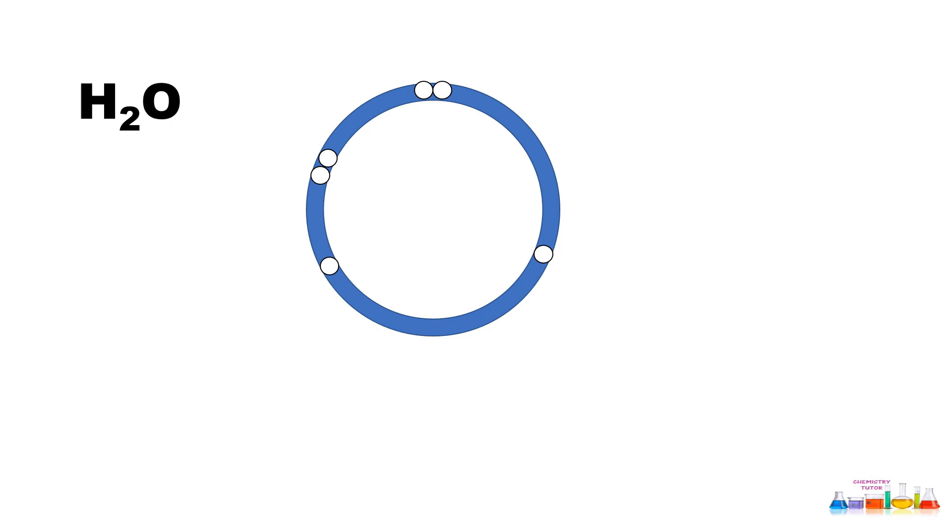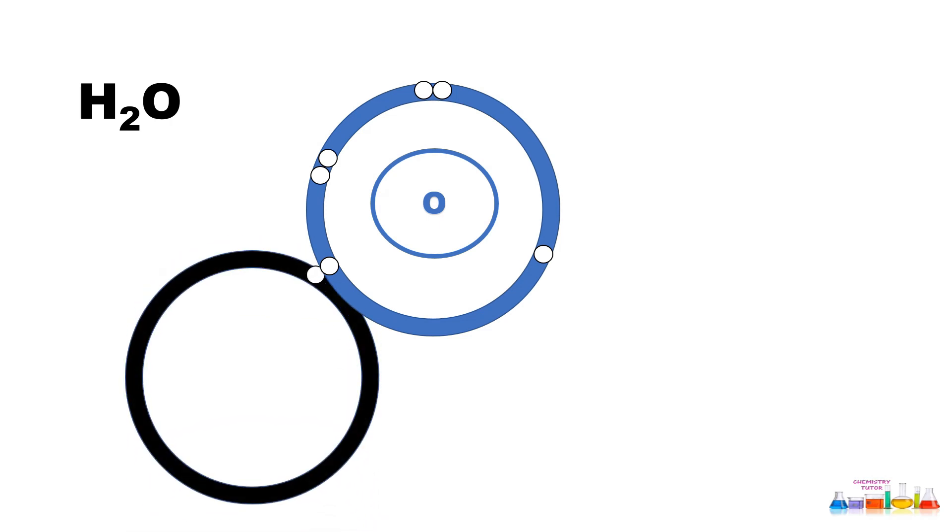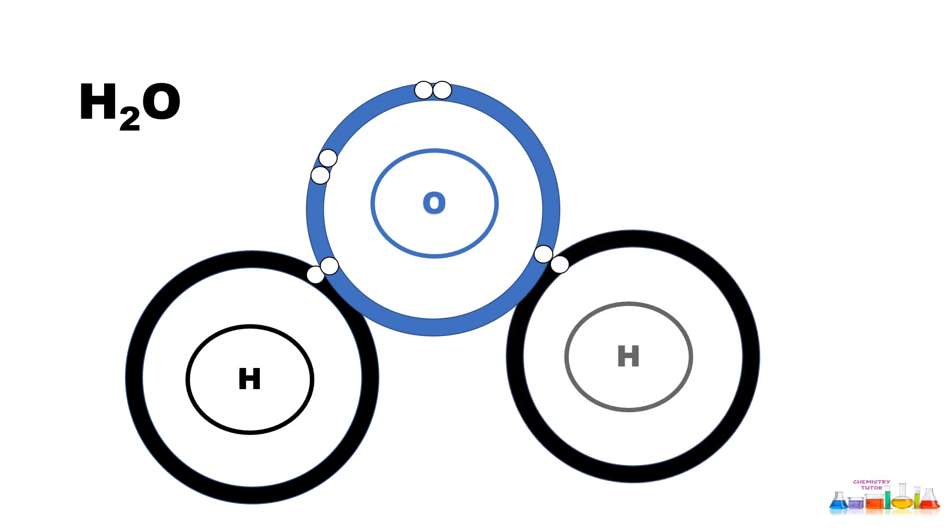Let me take the example of H₂O. Oxygen is present in group six, so in the outer shell, six electrons are there. In the water molecule, two hydrogen atoms are also present. Every hydrogen in this water molecule will share its one electron with oxygen. Now, if you see the electronic configuration...